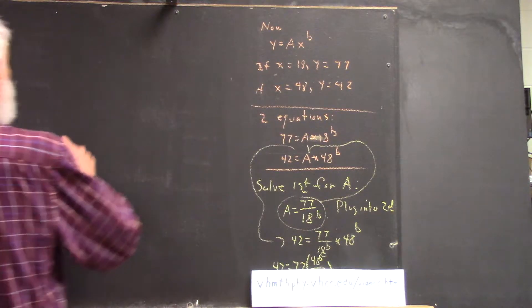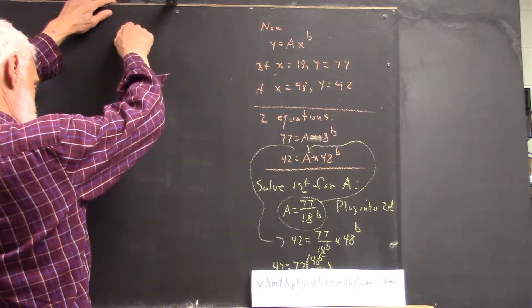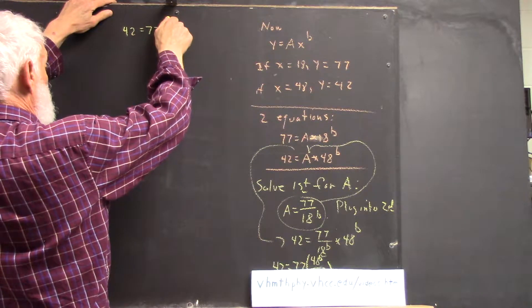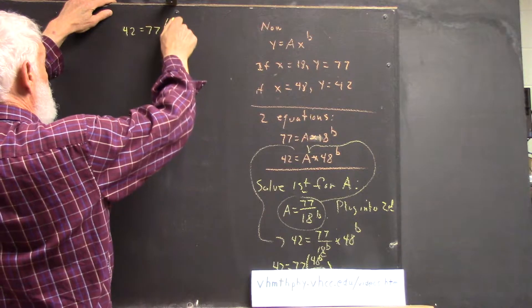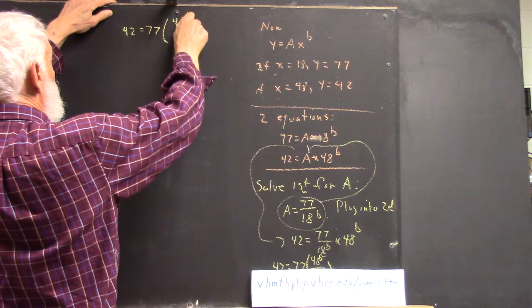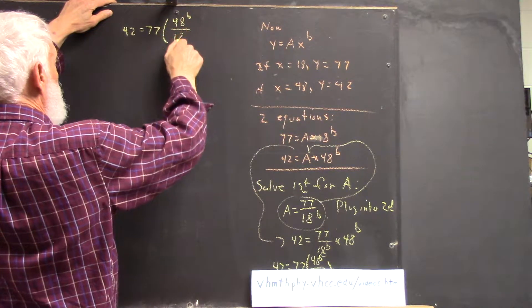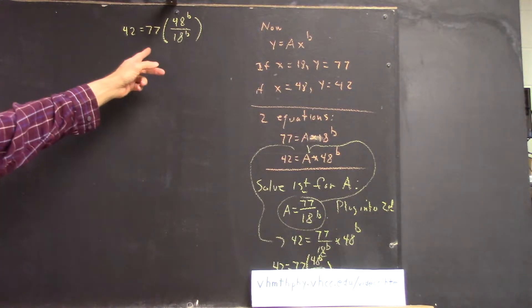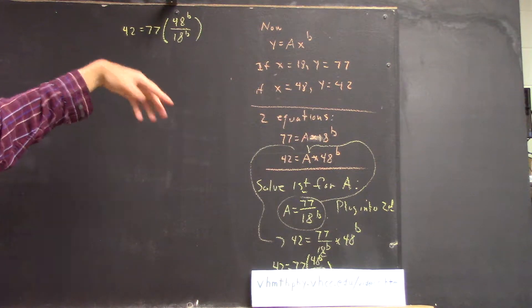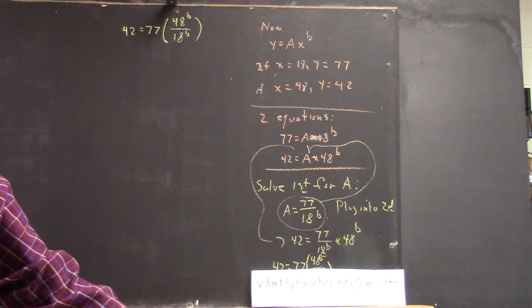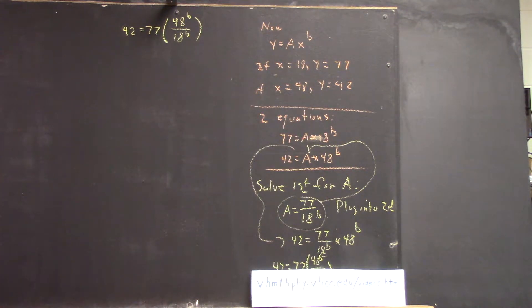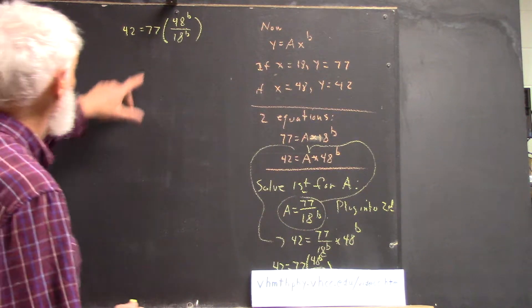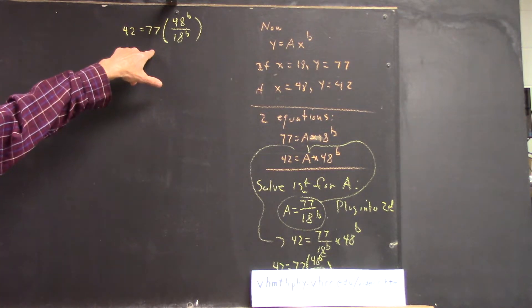We write 42 equals 77. And what I wrote was times 48 to the B over 18 to the B. Because clearly this can be rearranged as this. And if you don't see that, go back and think about the way fractions behave. It's the first thing we did. Right? And everybody got good at it. So, you know, you can do that. Okay? Very good.